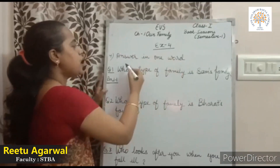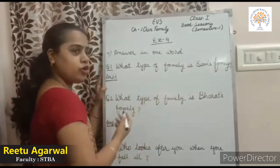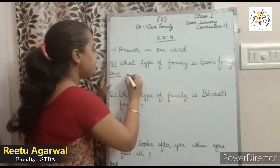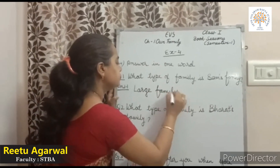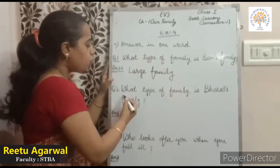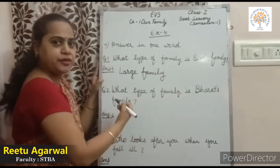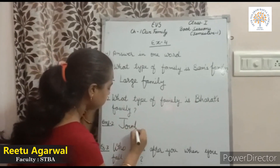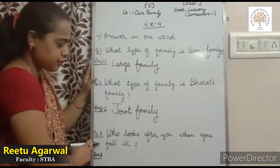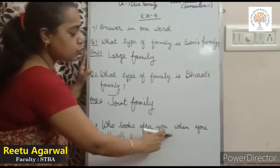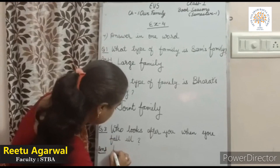Exercise 4: answer in one word. What type of family is Sam's family? Sam's family is a large family. What type of family is Bharat's family? Bharat's family is a joint family. Who looks after you when you fall ill? Your parents look after you. So you have to write: parents.